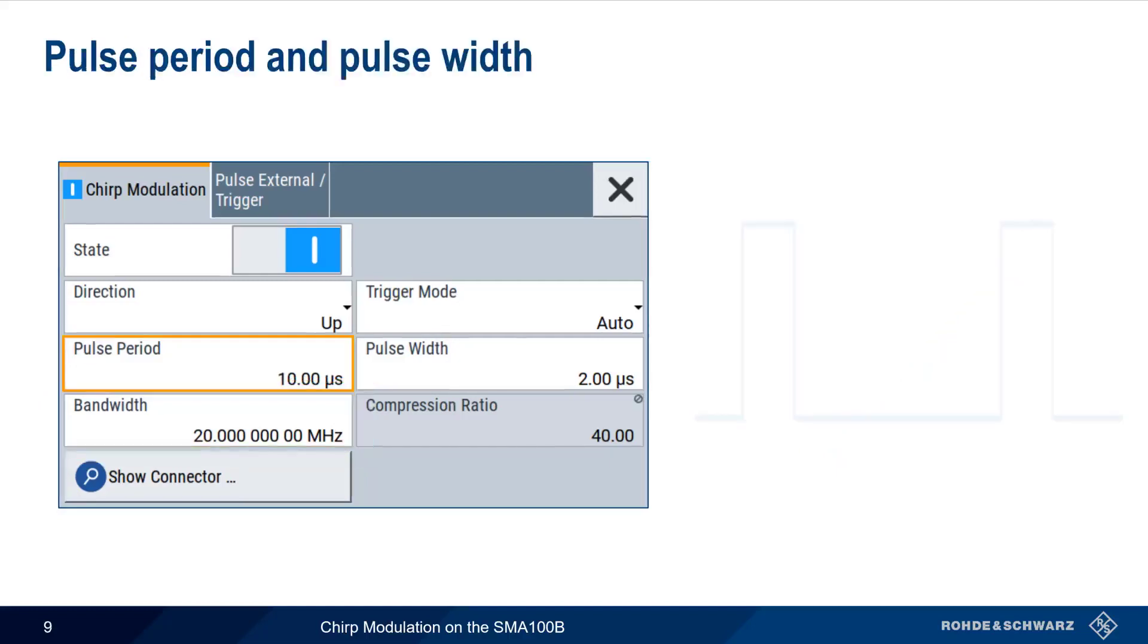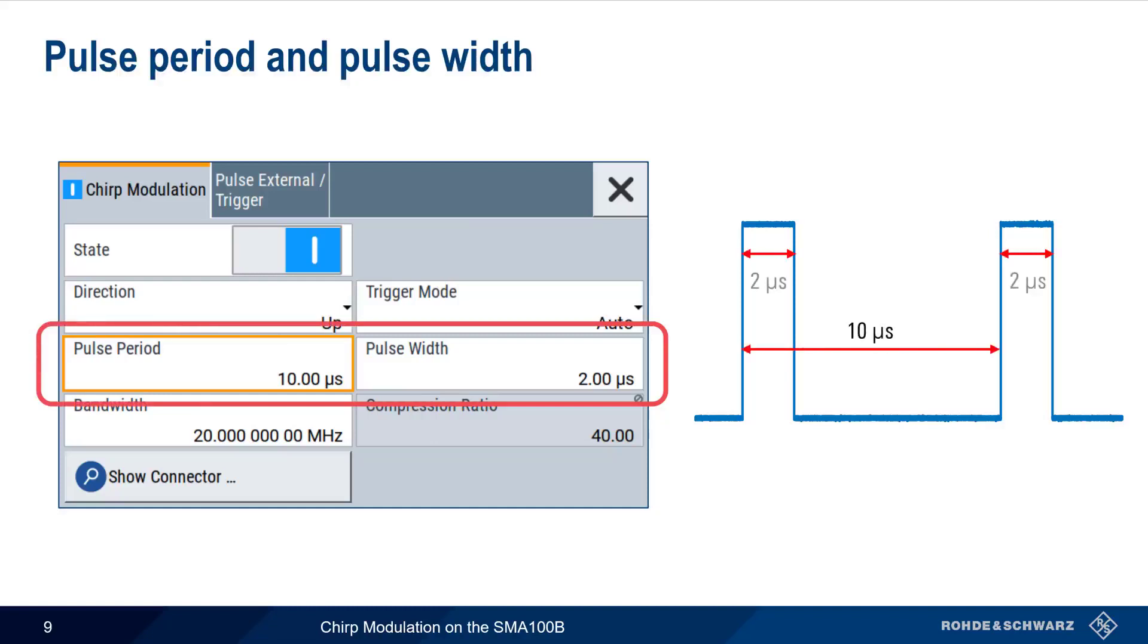Next we need to specify the pulse properties. These are the period, or time interval between the pulses, and the width of each pulse. Note that the compression ratio is simply the pulse width times the bandwidth.